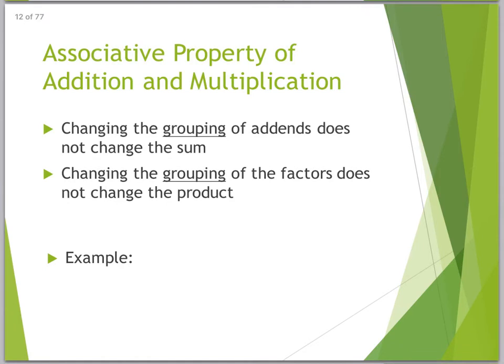Here we have the associative property of addition and multiplication. Associate means who you hang out with. So changing the grouping of addends does not change the sum. Changing the grouping of factors does not change the product. What that looks like is if I put it with just variables, I can say A times B times C is the same as A times B times C. Notice I did not change the order.